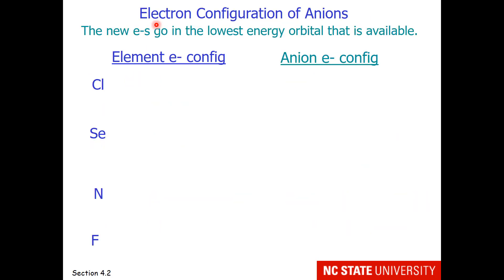For the electron configuration of anions, the new electrons go into the lowest energy orbital that is available. So if we think of neutral chlorine, this is the electron configuration here. We have 3p5.